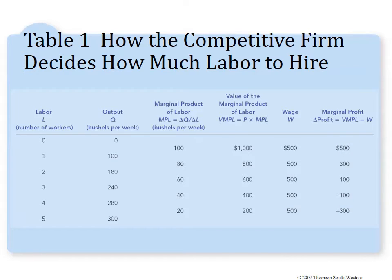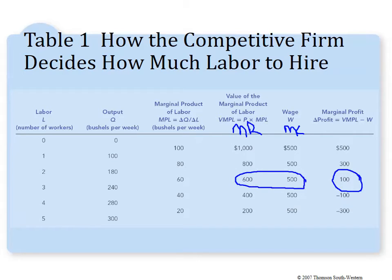The profit-maximizing quantity of workers here is three. Another way to think about VMPL is as marginal revenue, and wage as marginal cost — often called marginal factor cost. You want to equate marginal revenue and marginal cost. If you hired a fourth worker, that worker would bring in $400 in revenue but cost $500 in wages, so to maximize profits the best choice is to hire three workers.